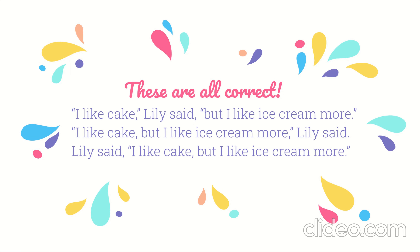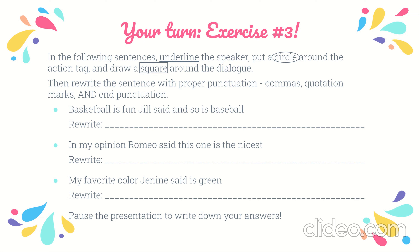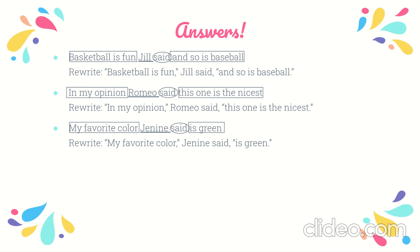You might have realized that we can write the same dialogue in different ways. 'Lily said, I like cake' and 'I like cake, Lily said' are the same sentence written differently. In the same way, our new sentence can be written in different ways — notice how the punctuation changes with each version. In Exercise 3, you'll draw two squares per sentence since there are two sets of dialogue. 'Basketball is fun' and 'so is baseball' are both dialogue. Jill is the speaker and 'said' is the action tag.